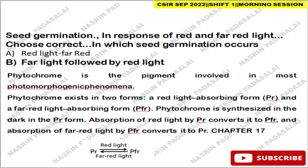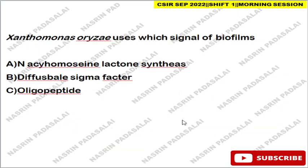The next question is about seed germination in response to red and far-red light — refer to chapter 17 in Taiz's book. Phytochrome is a pigment involved in photomorphogenetic processes and exists in two forms: the red-light-absorbing PR form and the far-red-light-absorbing PFR form. Phytochrome is synthesized in the dark in the PR form. Absorption of red light converts PR into PFR; absorption of far-red light converts PFR back into PR. This is called photoreversibility.